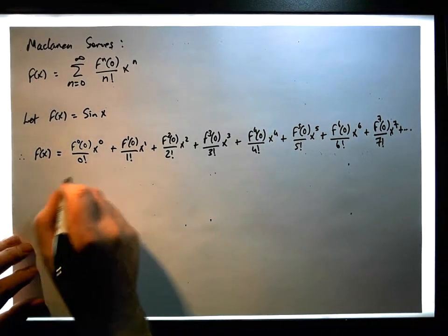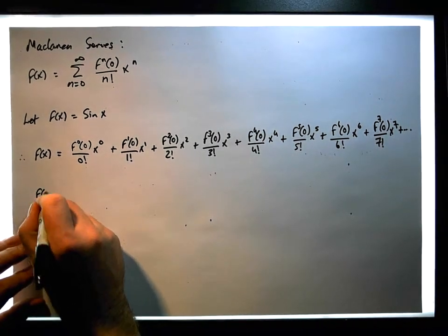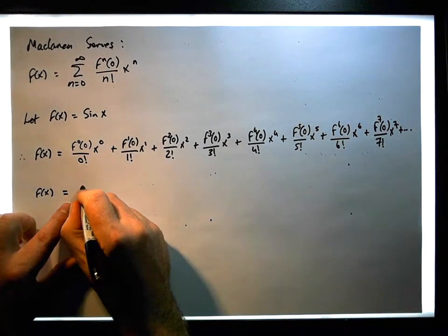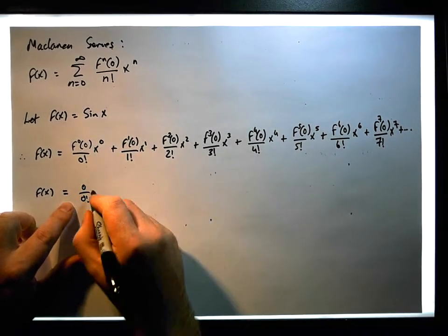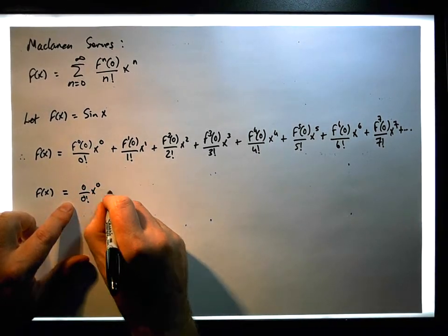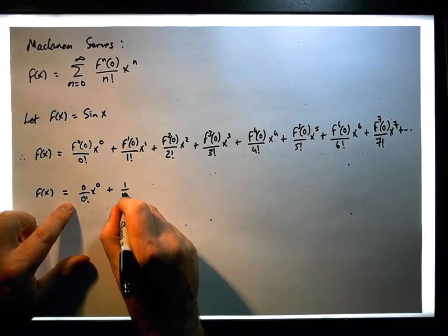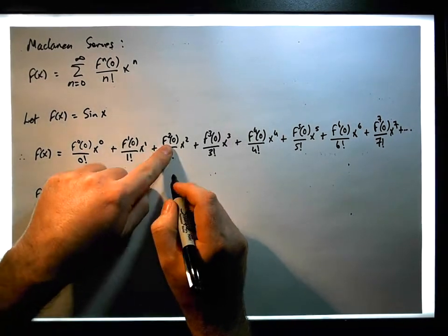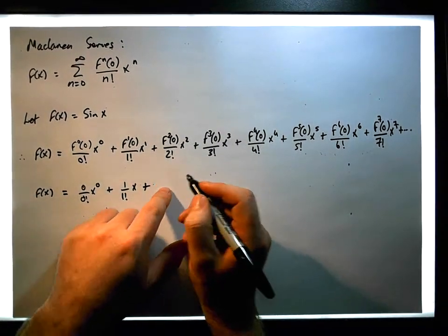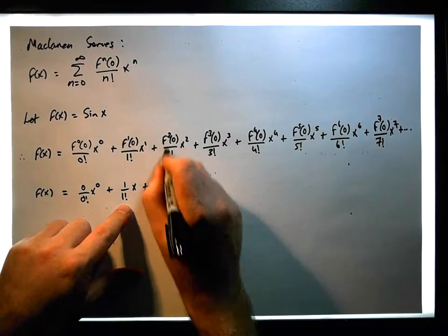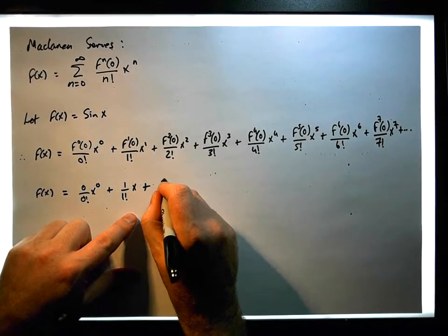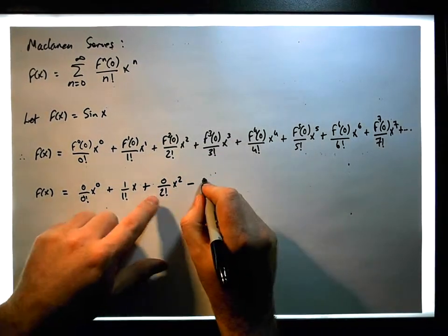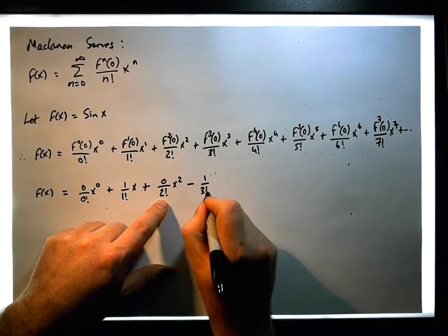Therefore, f of x is going to equal: 0 over 0! times x⁰, plus 1 over 1! times x, plus 0 over 2! times x², minus 1 over 3! times x³, and so on — substituting the sequence 0, 1, 0, −1 into each corresponding term.